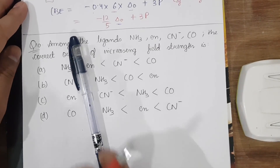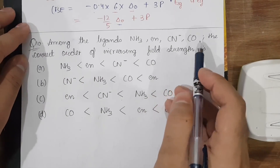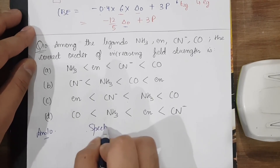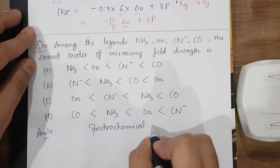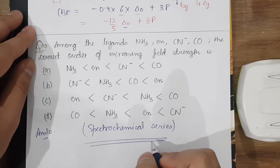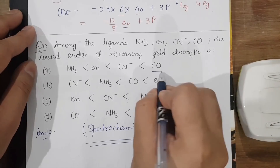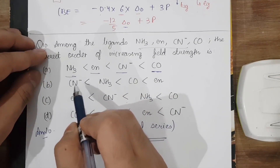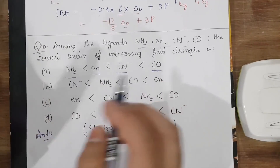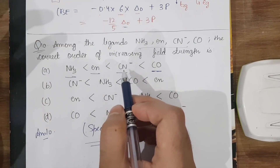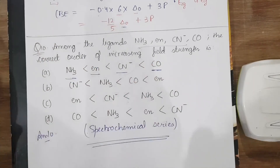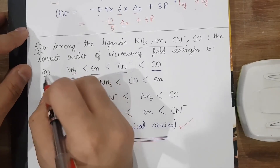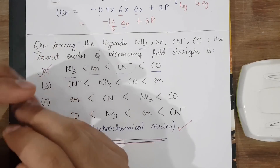The last question asks for the correct order of increasing field strength in the spectrochemical series among NH₃, en, CN⁻, and NCO⁻. The spectrochemical series is derived experimentally and is given in the NCERT. CO has the highest field strength, followed by CN⁻, then en, then NH₃. The logic is that the negative charge on carbon in CN⁻ makes it a better nucleophile. The correct order is option A.